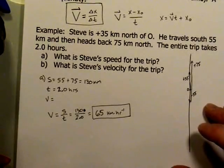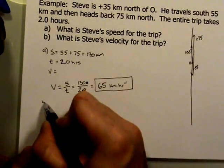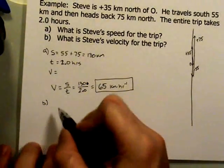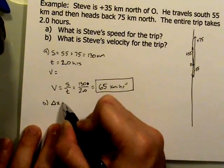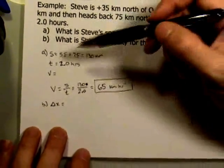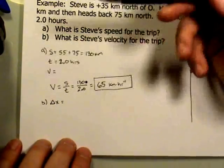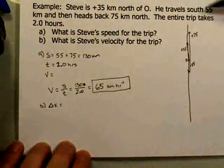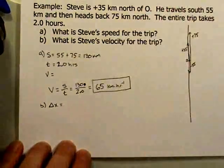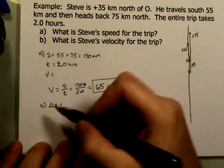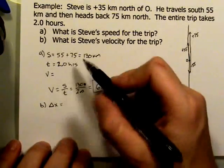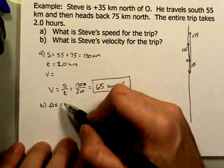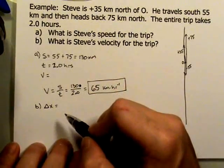Okay. Now part b asks about the velocity. So let's do part b underneath here. So in this case, I want delta x. Now I want you to really notice that when I was calculating the distance in order to get the speed, I looked at the 55 and the 75. Now, in the case of the change in displacement, I don't really need to look at those two. What I need to look at is where was I at the end, and where was I in the beginning.